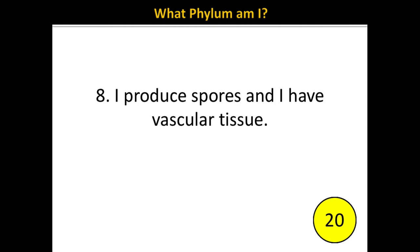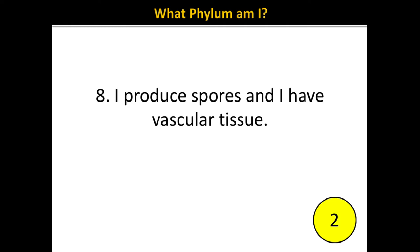Number eight: I produce spores, and I have vascular tissue. The correct answer is Pterophyta. These are the ferns.